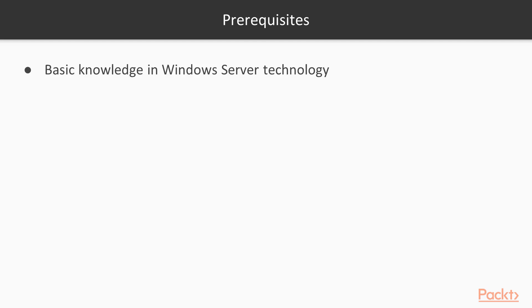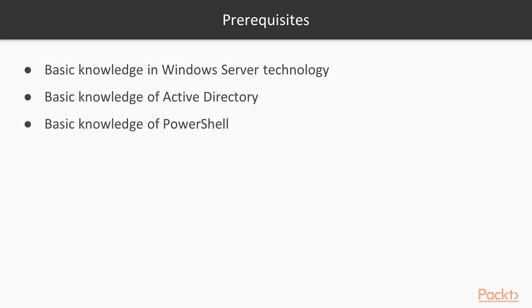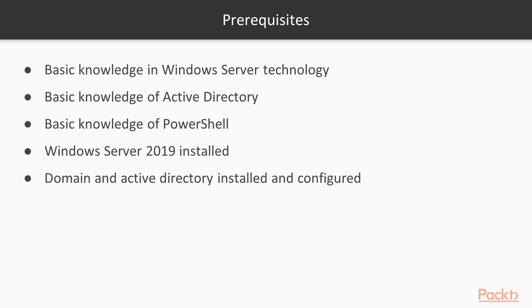The prerequisites for this course are not that much. There is a basic knowledge of Windows Server technologies, a basic knowledge of Active Directory, a basic knowledge of PowerShell, and the installation of Windows Server 2019. It does not need to be Windows 2019; it can also be Windows 2012 or 2016. And configure the domain and Active Directory on that server that you have installed.